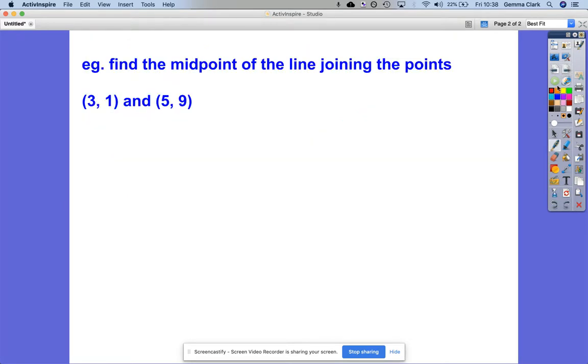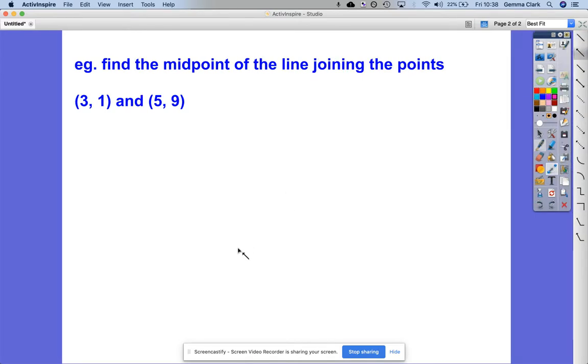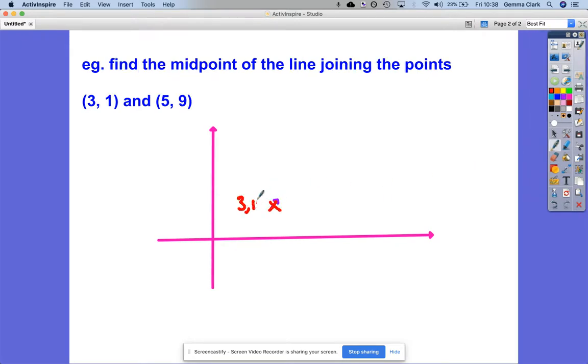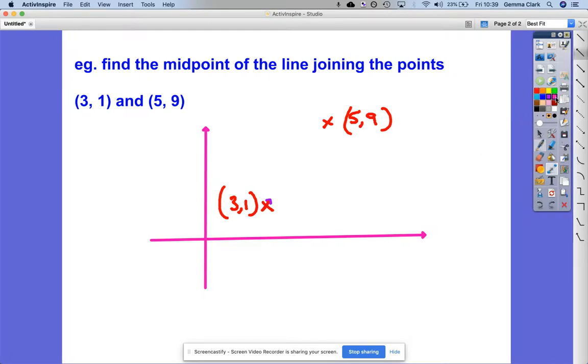Find the midpoint of the line joining the points (3, 1) and (5, 9). I'm going to go and draw a quick set of axes. So we've got (3, 1), so across 3 and up 1 might be somewhere say there. And then we might go across 5, 9 might be up here. And then let's put the line segment in.